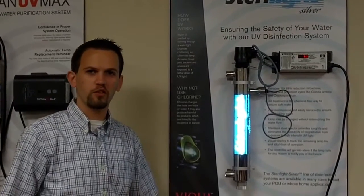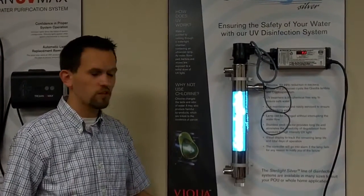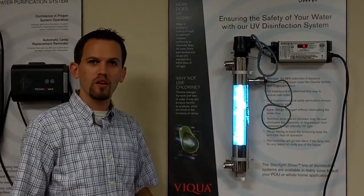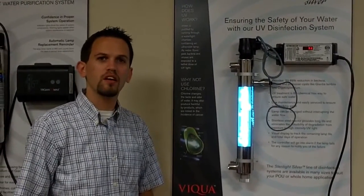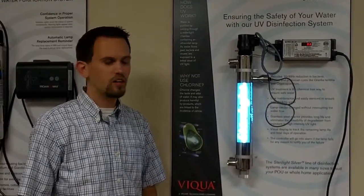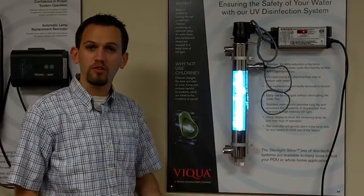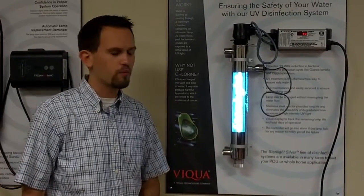First thing you want to do is make sure that you turn off the water to the system and also open up a faucet somewhere down the line so that you depressurize it. We do that just to make sure that nothing goes flying when you start taking things apart and that we are able to control what water comes out.